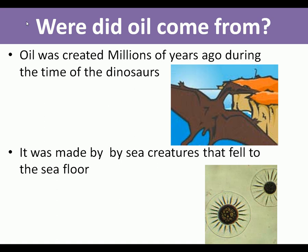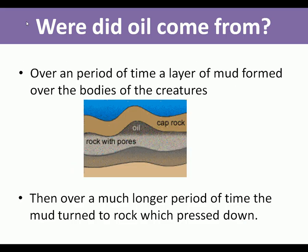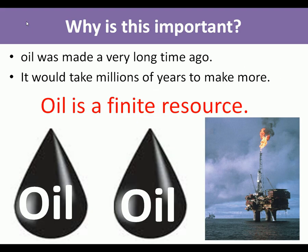Oil was created millions of years ago in the time of the dinosaurs. It was sea creatures and plants that fell to the sea floor; the bodies built up into layers, rock formed over them, and the pressure turned it into oil. This was a one-off thing, so oil was made a long time ago.